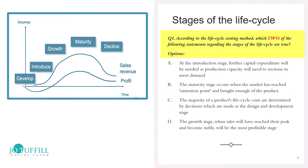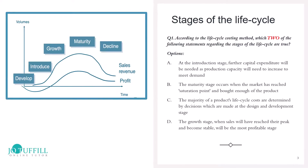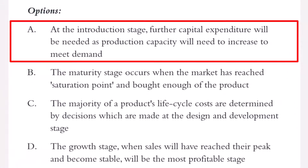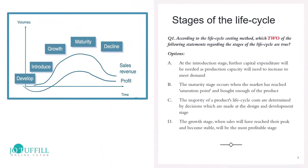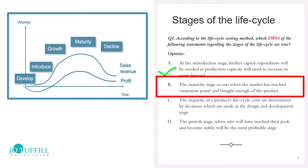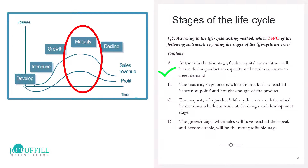Question 1 says: according to the life cycle costing method, which two of the following statements regarding the stages of life cycle are true? Option A: at the introduction stage, further capital expenditure will be needed as production capacity will need to increase to meet demand. Yes, at the introduction stage it's mainly dominated by fixed costs as we increase our capex, so that's true. Option B: the maturity stage occurs when the market has reached its saturation point. Now you may think that's true, but look at the diagram — we haven't reached saturation point and we're not going into decline at maturity. We're selling at the highest revenue point — it's our cash cow.